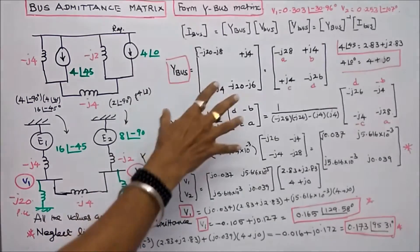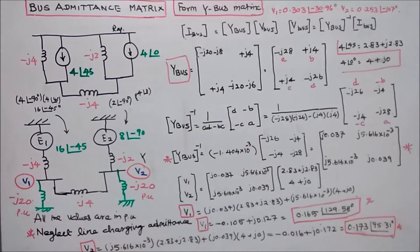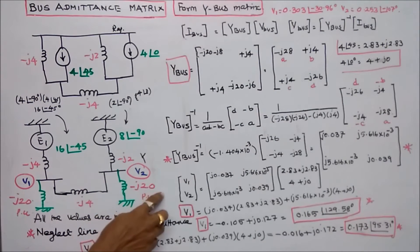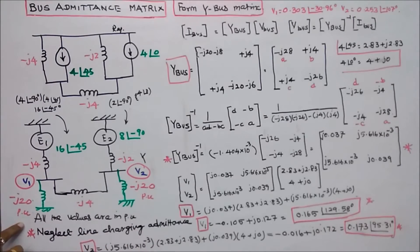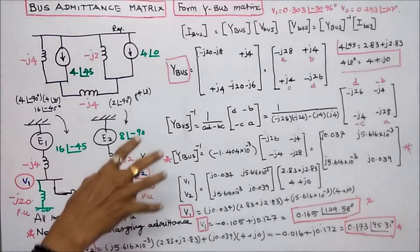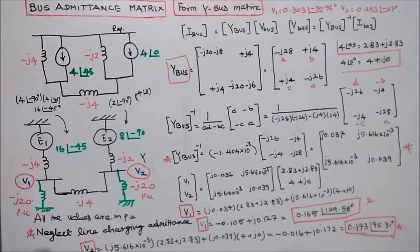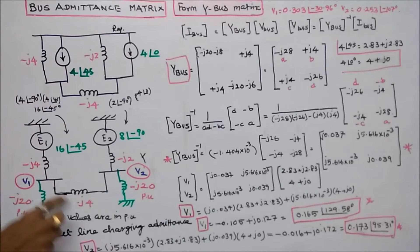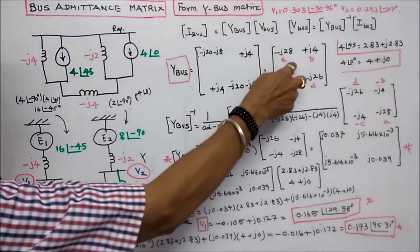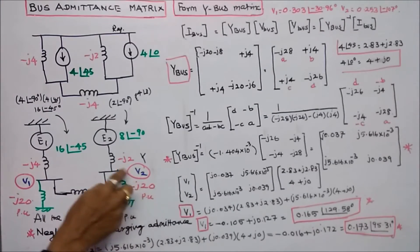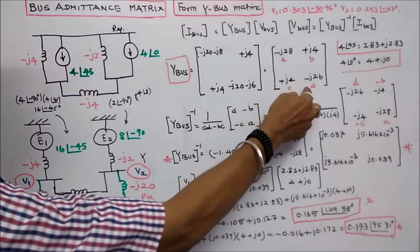In the same problem, I remove the capacitor and add a shunt reactor of minus J20 per unit at each bus. The question is to form the Y-bus matrix and find bus voltages V1 and V2. At bus 1, three elements: minus J20, minus J4, minus J4, giving minus J28. At bus 2, three elements: minus J20, minus J2, minus J4, giving minus J26.